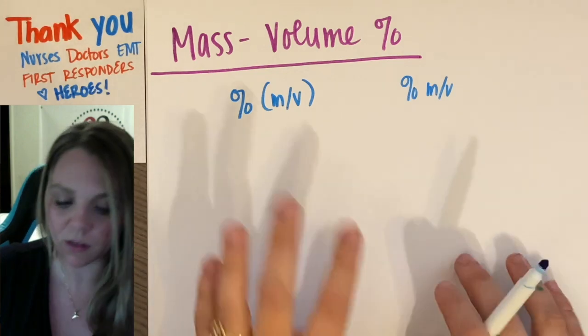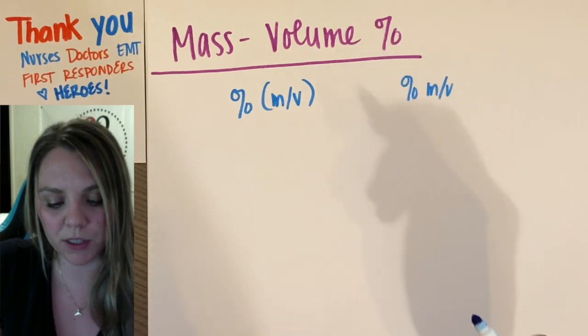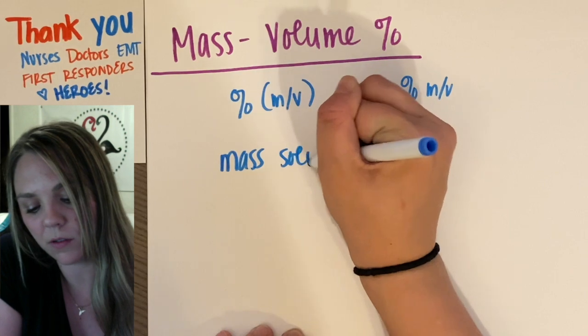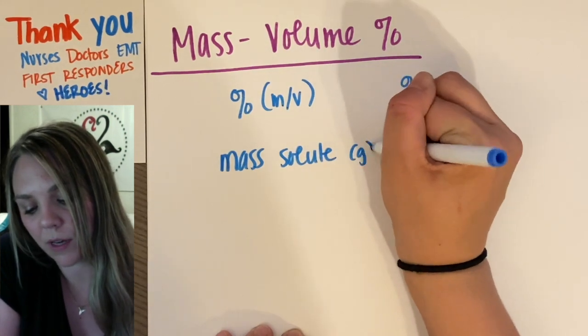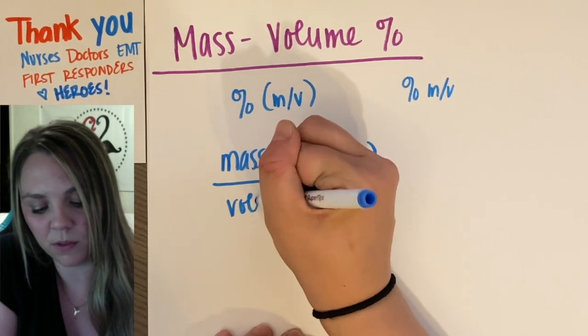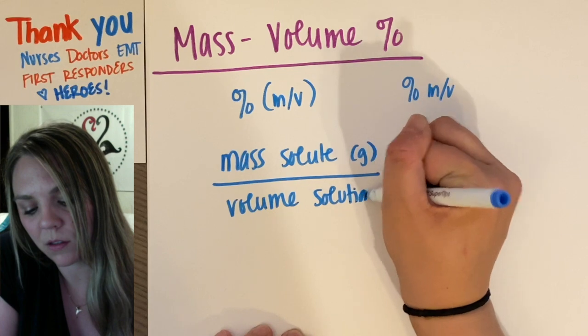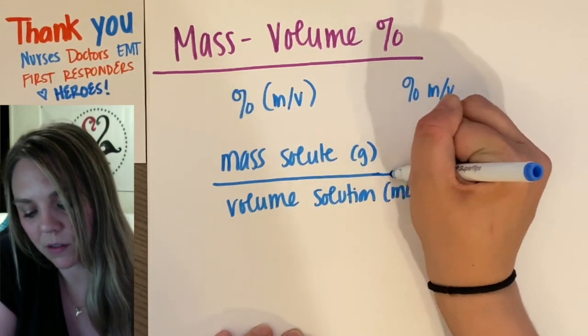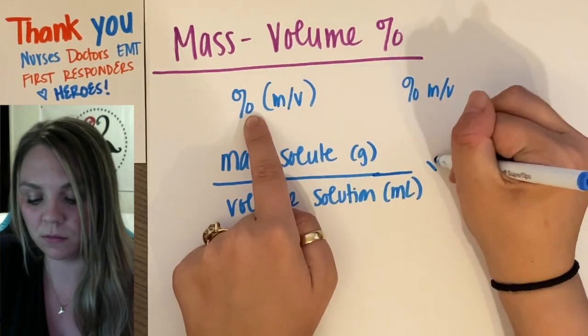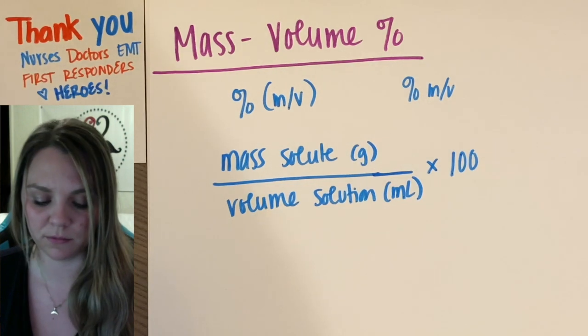So the actual equation for mass volume percent is the mass of your solute in grams divided by the volume of your solution in milliliters. And then because it's a percent, you're going to multiply by 100. That's it.